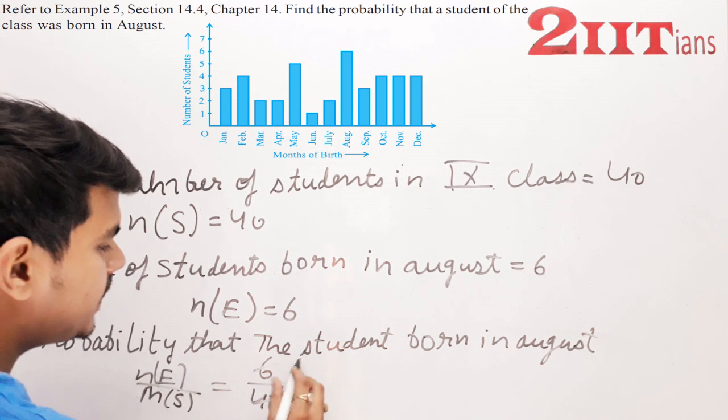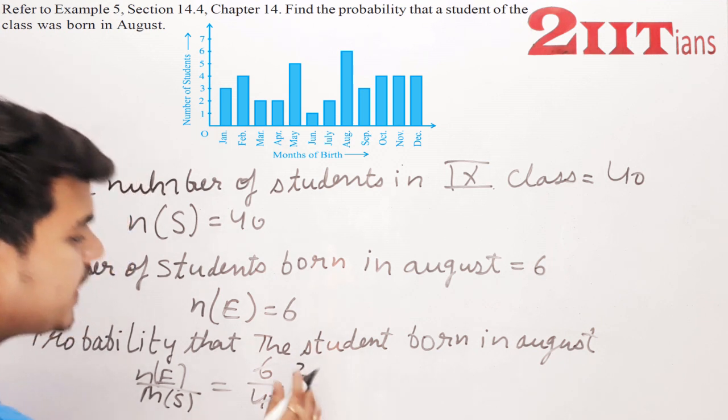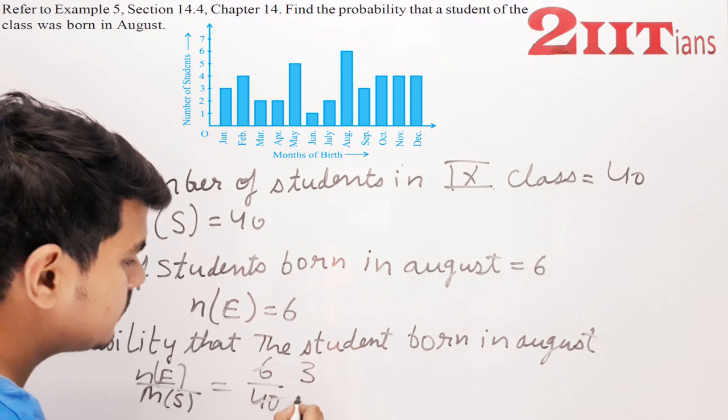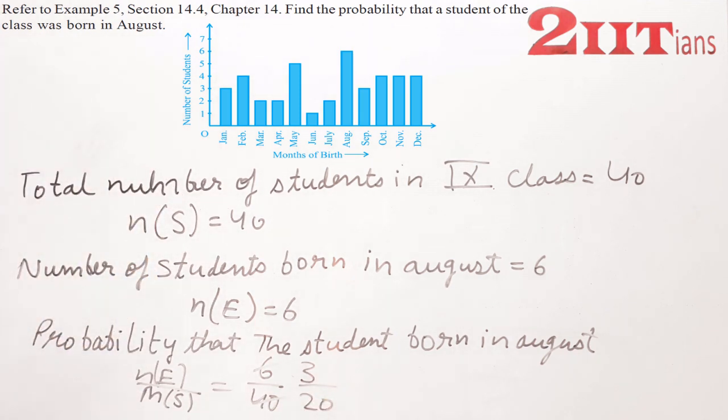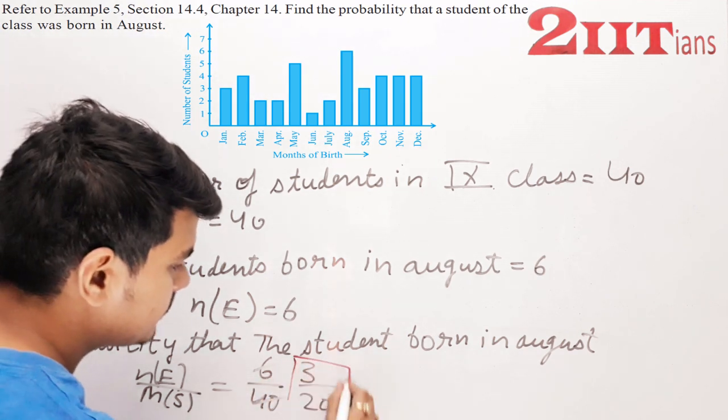Let me correct that: it's 3 by 20. So my probability is 3/20. This is the answer.